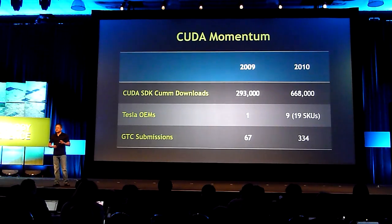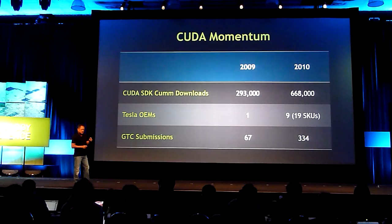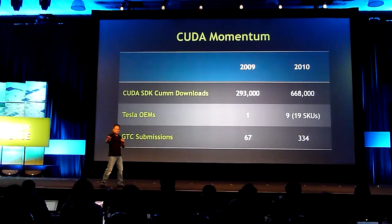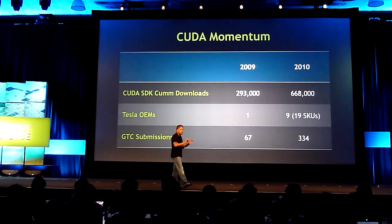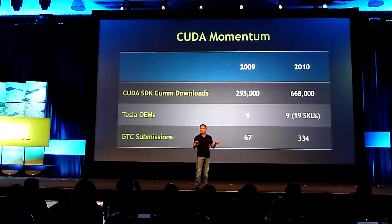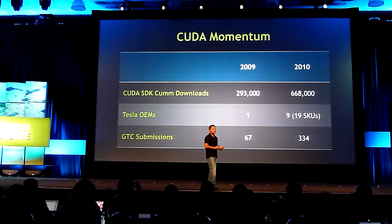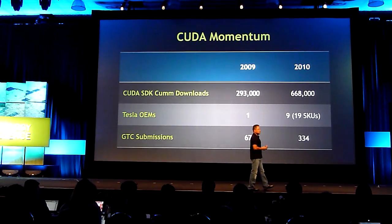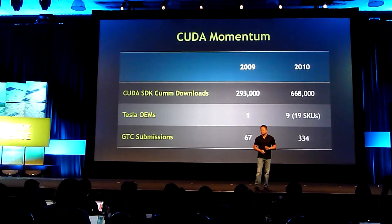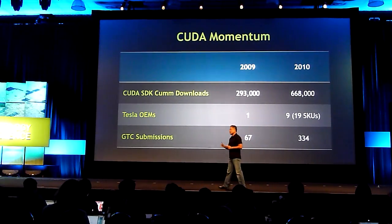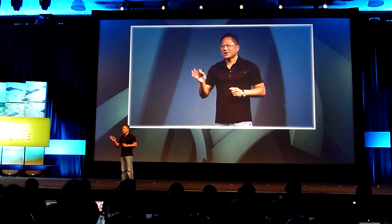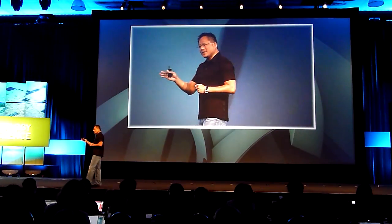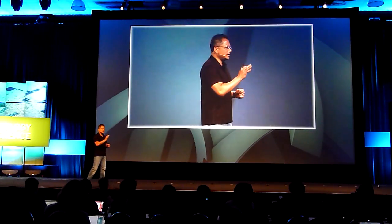The second metric I chose reflects the interest in the end markets to deploy CUDA applications. Because if there's interest in the end markets and the end user base to deploy these applications at production scale, that interest would be reflected back to the OEMs, and the OEMs would therefore design high-performance computing platforms based around Tesla to offer to the marketplace. The Tesla number of OEMs last year at this time was one — we announced one OEM, there was one other which was us, and we were seeding U-Racks to developers all over the world.